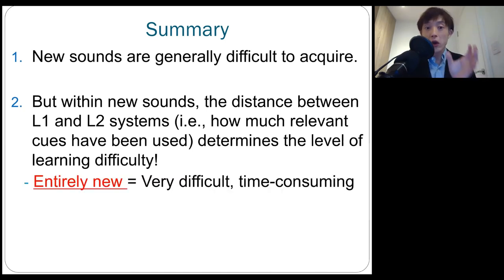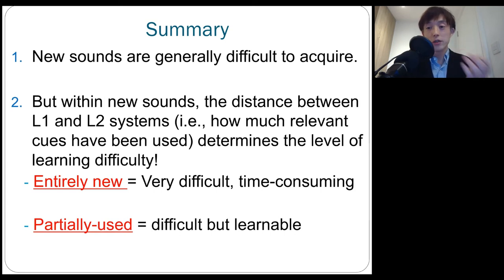So, if the cues are entirely new, such as the acquisition of English R and L by Japanese people, sensitivity to higher frequency information, as well as the three constrictions at the very same time for English R, this instance could be very difficult and time-consuming. But if the cues are partially used, in English, pitch height is used but not contour, but in Mandarin, pitch height and contour, then in this case, it's difficult to acquire, but still learnable.